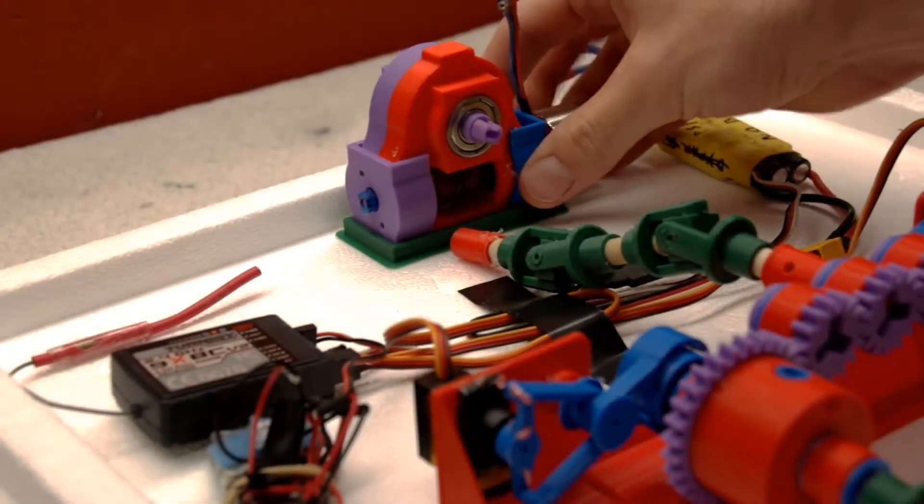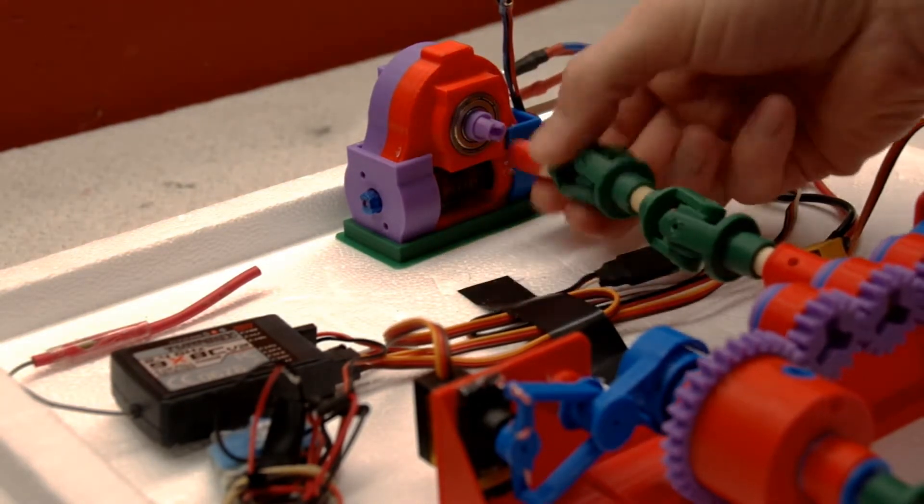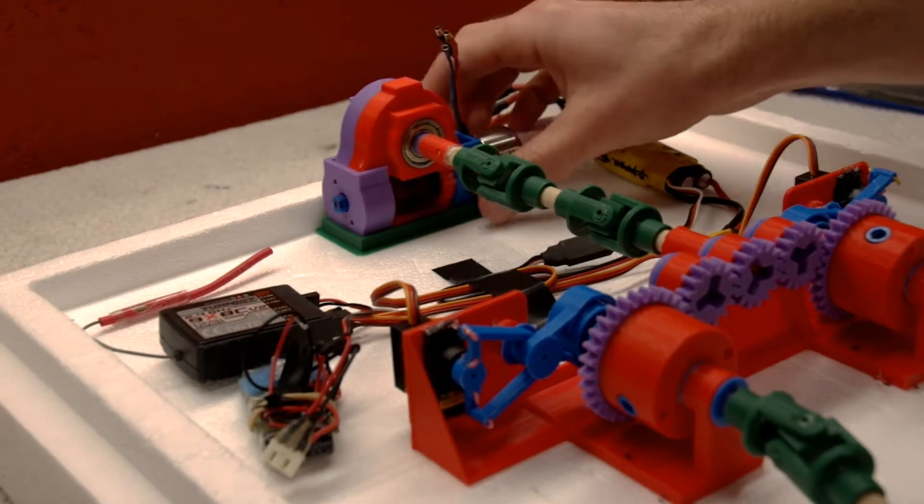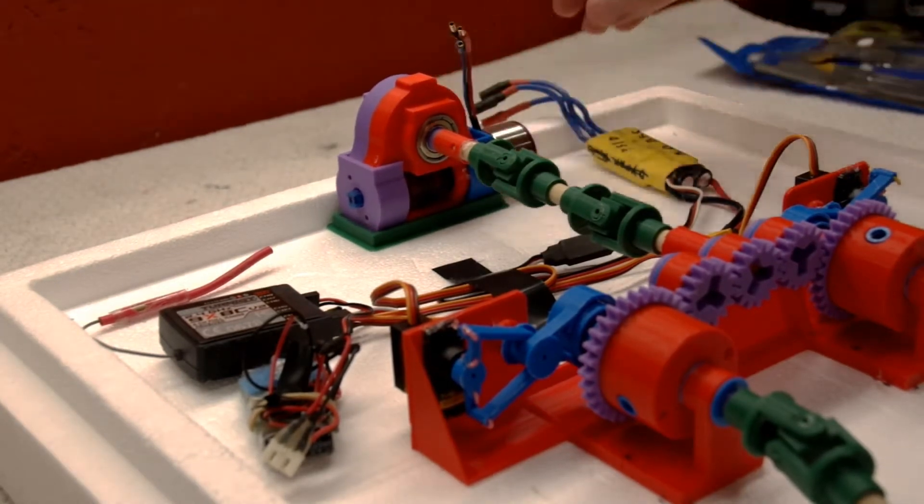Now it's time to attach the actual motor. This is a high-speed brushless motor connected to a worm drive reduction gearbox. The ratio is 40 to 1 with a maximum output of about 240 RPM.